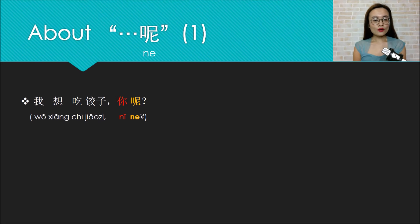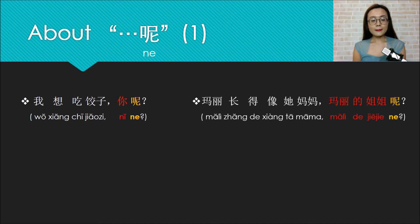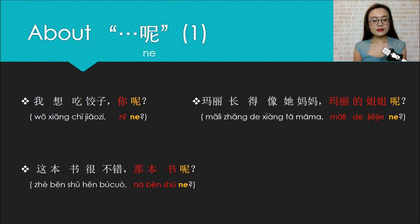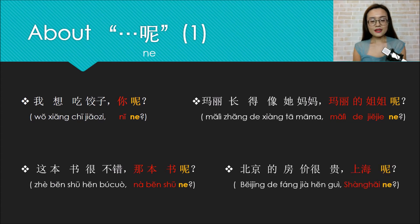Now let me give you some examples. First one: Wo xiang chi jiaozi, ni ne? I want to eat dumplings, what about you? Mali zhang de xiang ta mama, Mali de jiejie ne? Mary looks like her mom, how about Mary's sister? Zhe ben shu hen bucuo, na ben shu ne? This book is very good, how about that book? Beijing de fangjia hen gui, Shanghai ne? The housing price in Beijing is quite expensive, how about Shanghai?